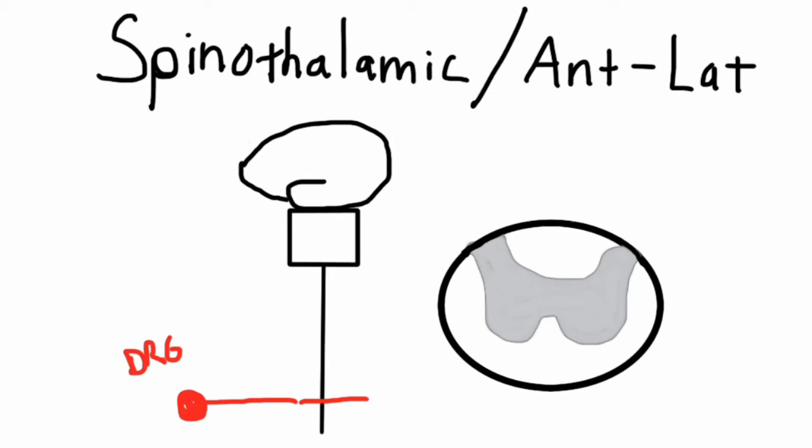Wait, that's not necessarily true though. You've probably heard that the spinothalamic tract is the only one that immediately crosses over, but that's not 100% true. It kind of does, but as it's crossing over, it can move up a level or two before then ascending the rest of the way. So, just keep that in mind. It doesn't always cross over immediately. It can move up a couple of segments.